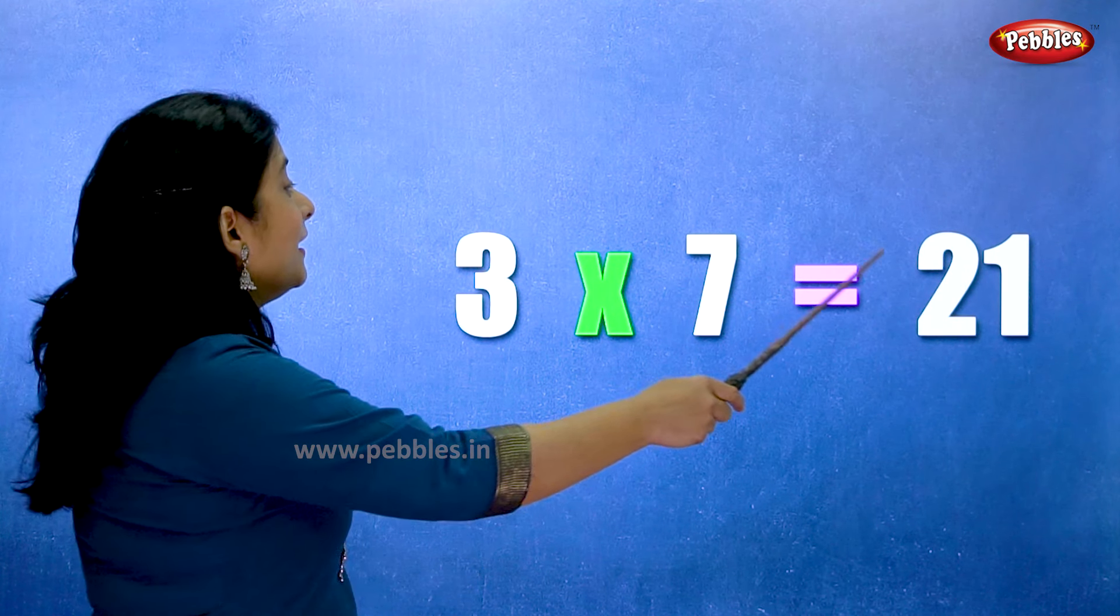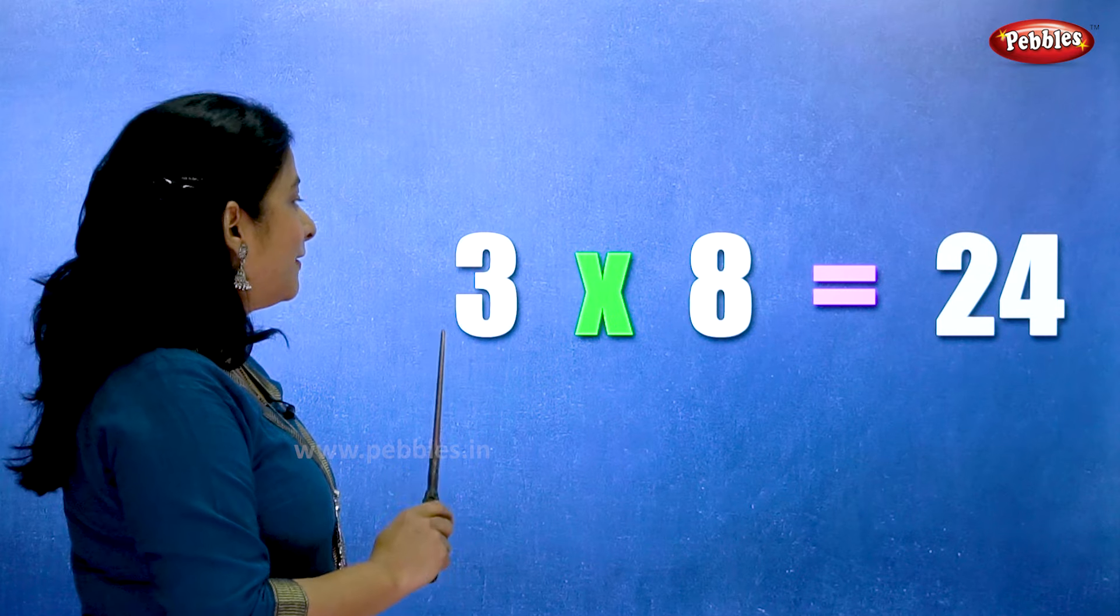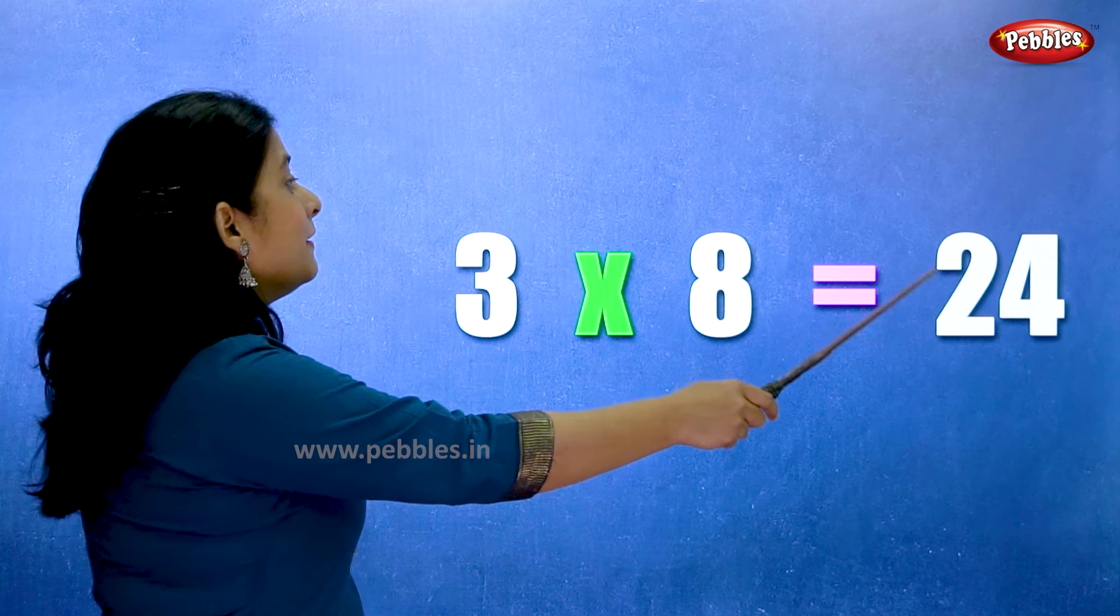Three sevens are twenty-one. Three eights are twenty-four.